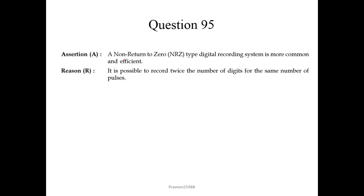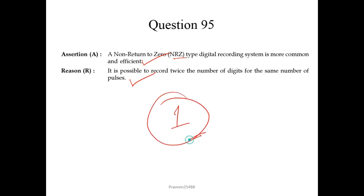Question 95. Assertion: a non-return-to-zero (NRZ) type digital recording system is more common and efficient — correct. Reason: it is possible to record twice the number of digits for the same number of pulses — also correct. The reason is the explanation of the assertion. So we choose option 1.